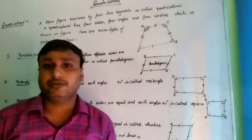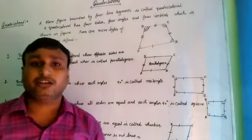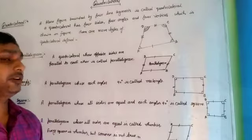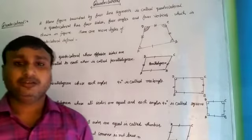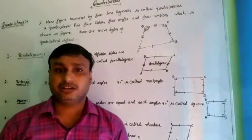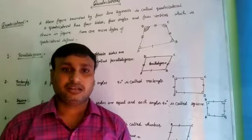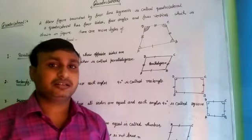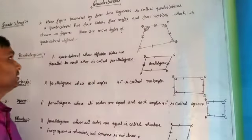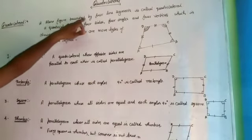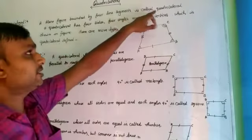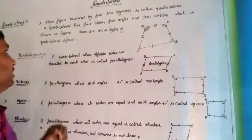Hello students. Today I am going to start a new chapter, that is quadrilateral. You have already discussed about the quadrilateral in previous classes. The definition of quadrilateral is: a plane figure bounded by 4 line segments is called a quadrilateral.